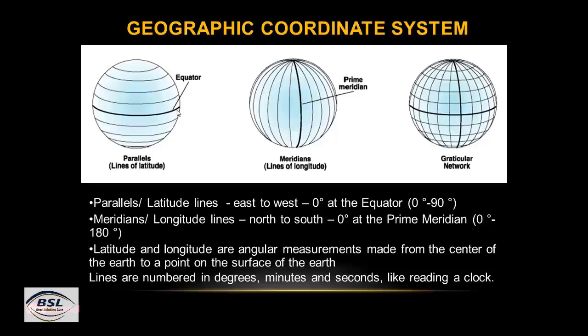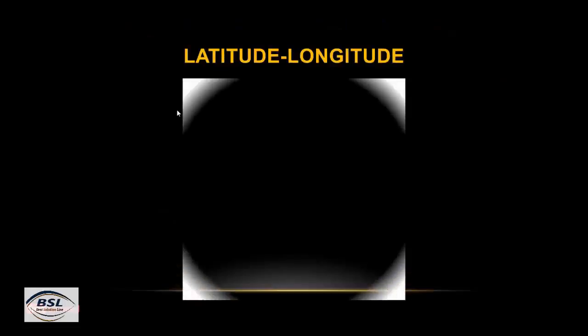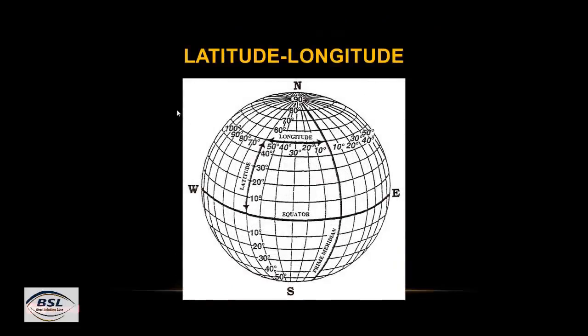Parallel latitude lines run east to west, ranging from 0 to 90 degrees — 0 at the equator and 90 at the north or south pole. For meridian lines, the prime meridian is zero degrees. To the right is 180 degrees east meridian and to the left is 180 degrees west meridian.